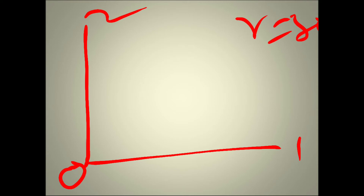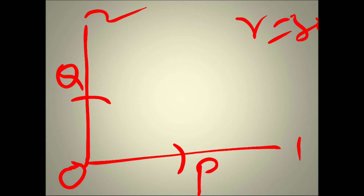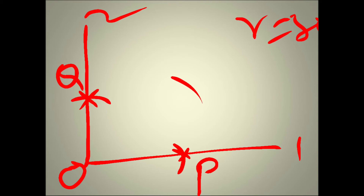With point O as center, draw an arc on straight line one — this is point P. Similarly, draw an arc on straight line two — this is point Q. The radius is equal to 30 mm. After that, with the same radius of 30 mm and center O, draw an arc. This gives us point O1.